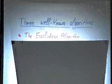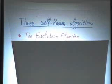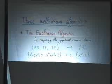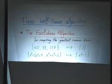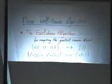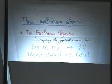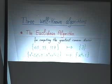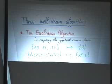The first one goes back to the ancient Greeks. The Euclidean algorithm is a method for computing the greatest common divisor. In the first example, the input would be 60, 99, and 117. You feed this into the algorithm and out comes the output three, which is the greatest common divisor.